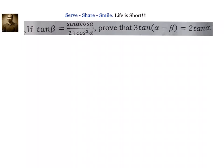Now, how to solve this problem? We see here tan, tan, and this is tan. So let us try to transform this also in terms of tan. Once we get this in terms of tan, then we will apply the formula for tan of α minus β, substitute, and we will prove that it is equal to 2 into tan α.